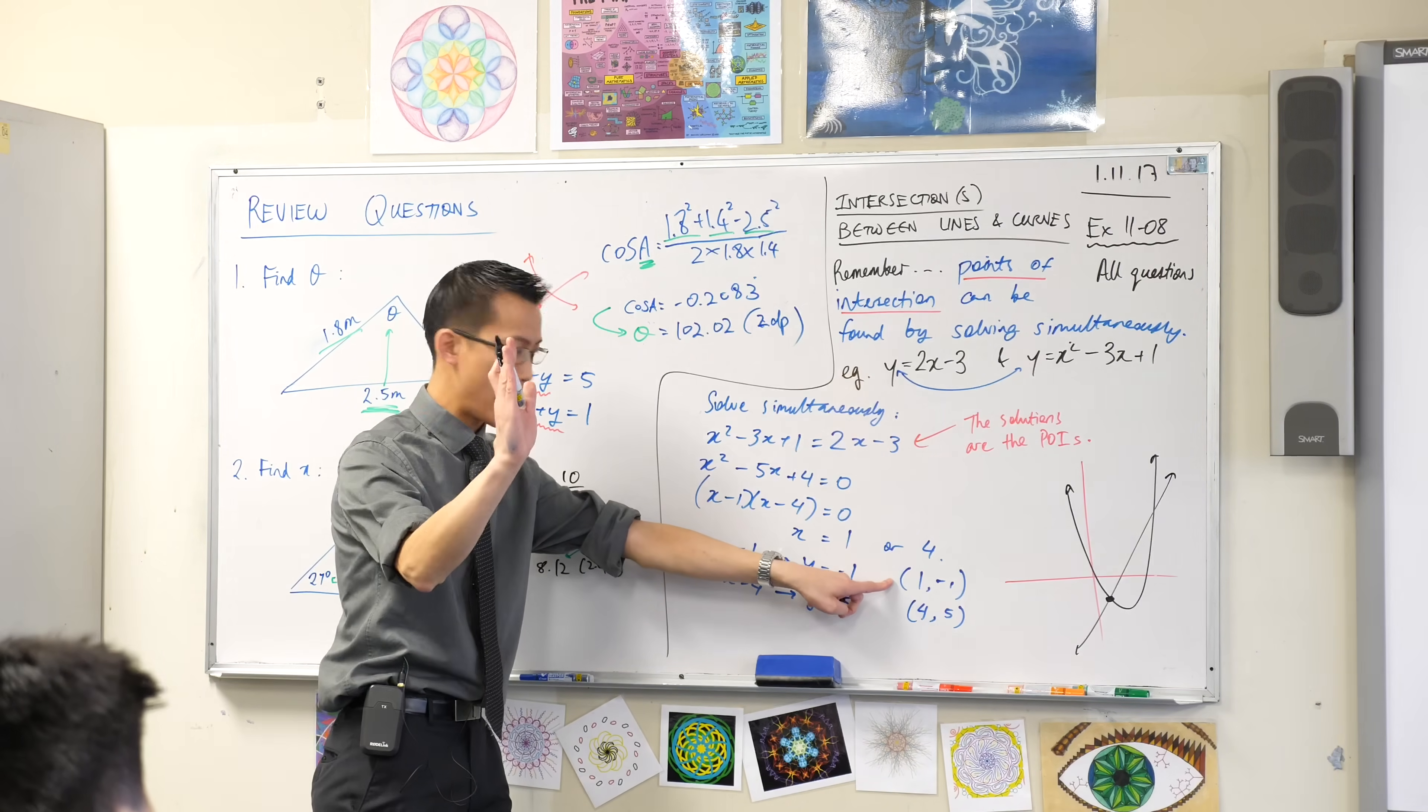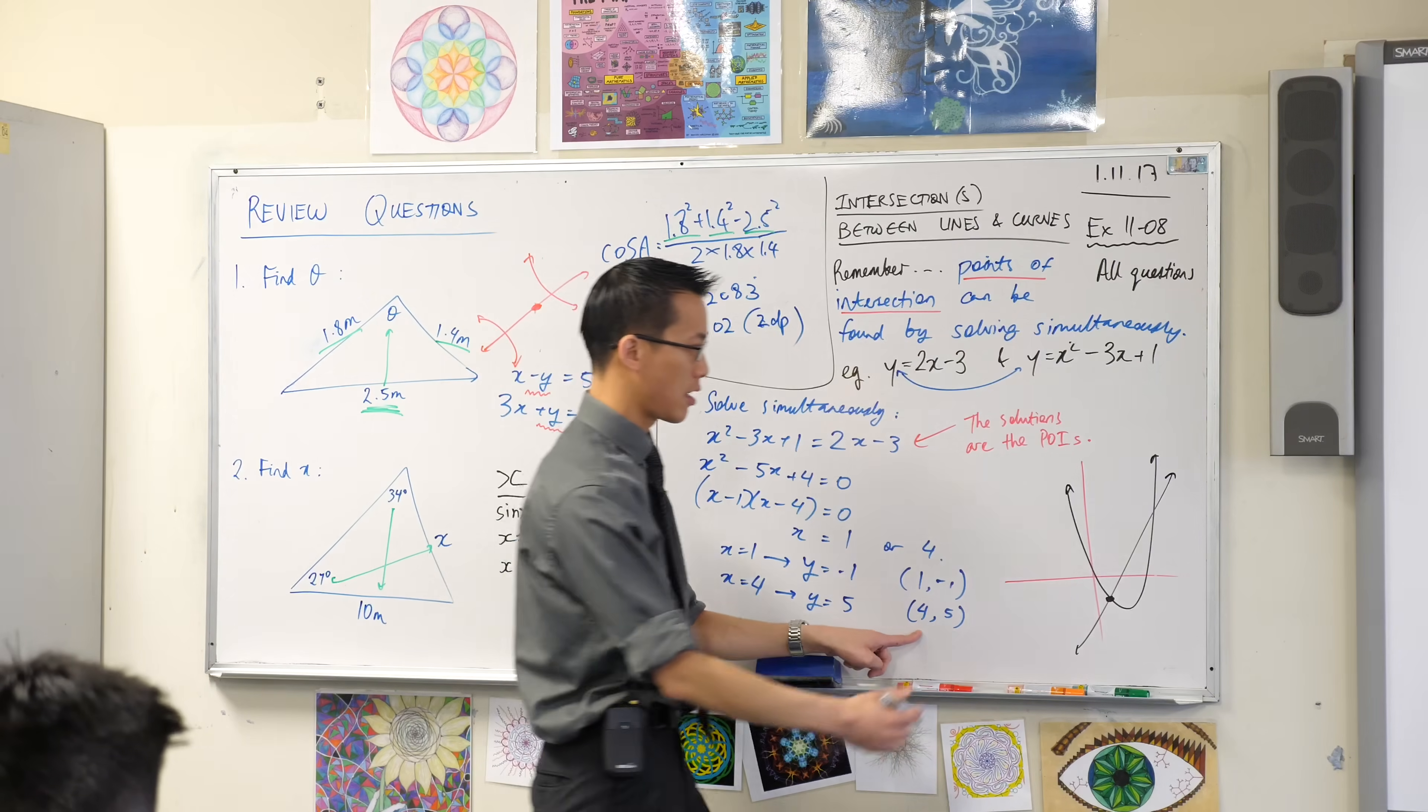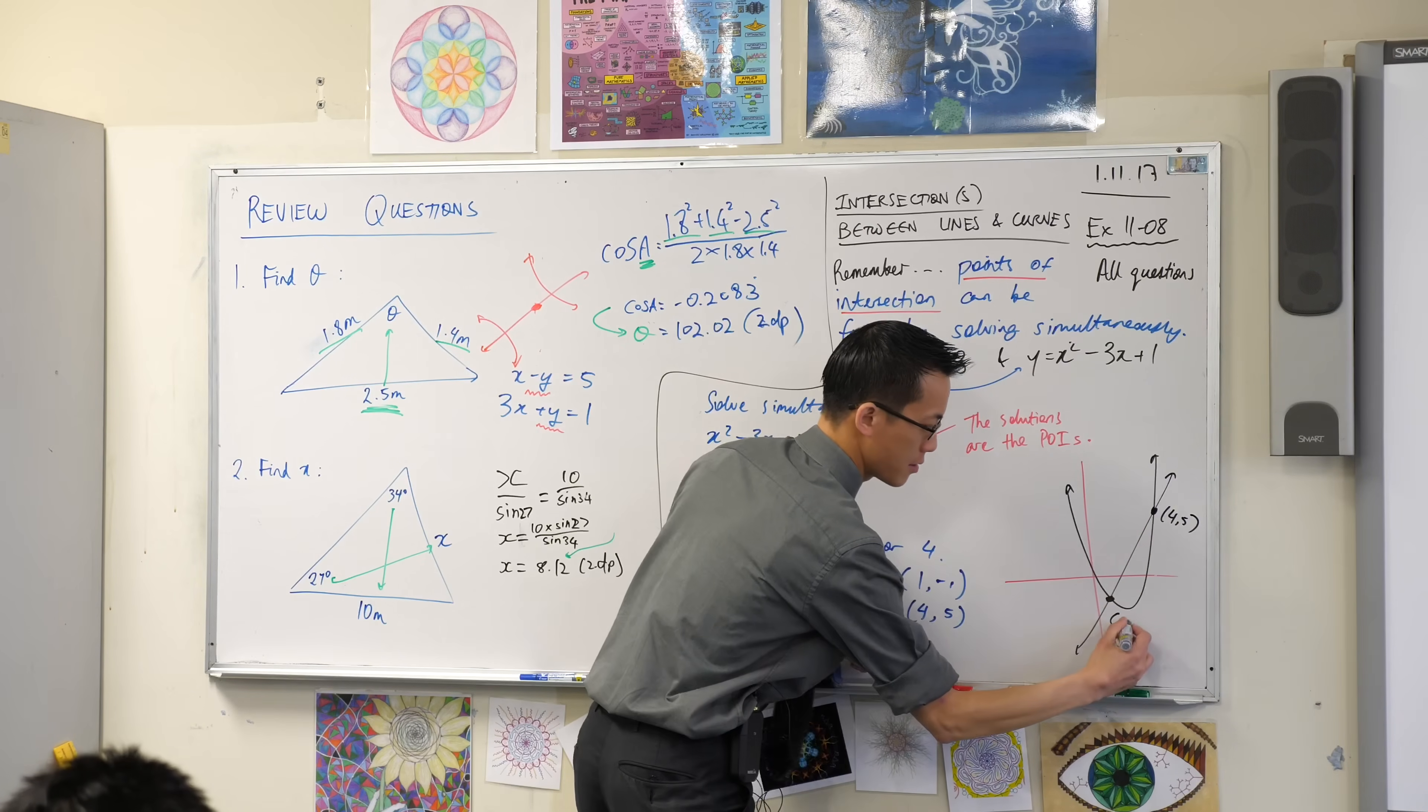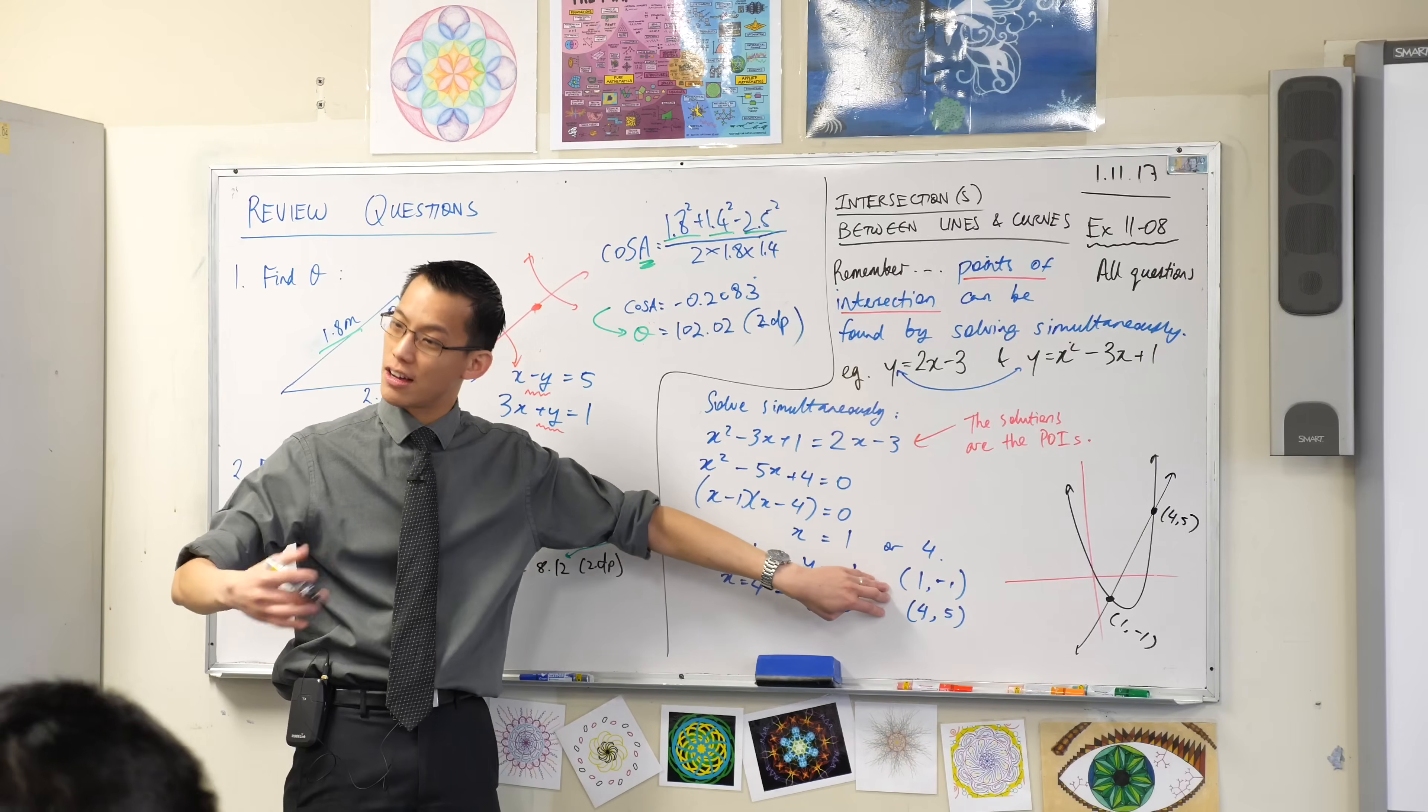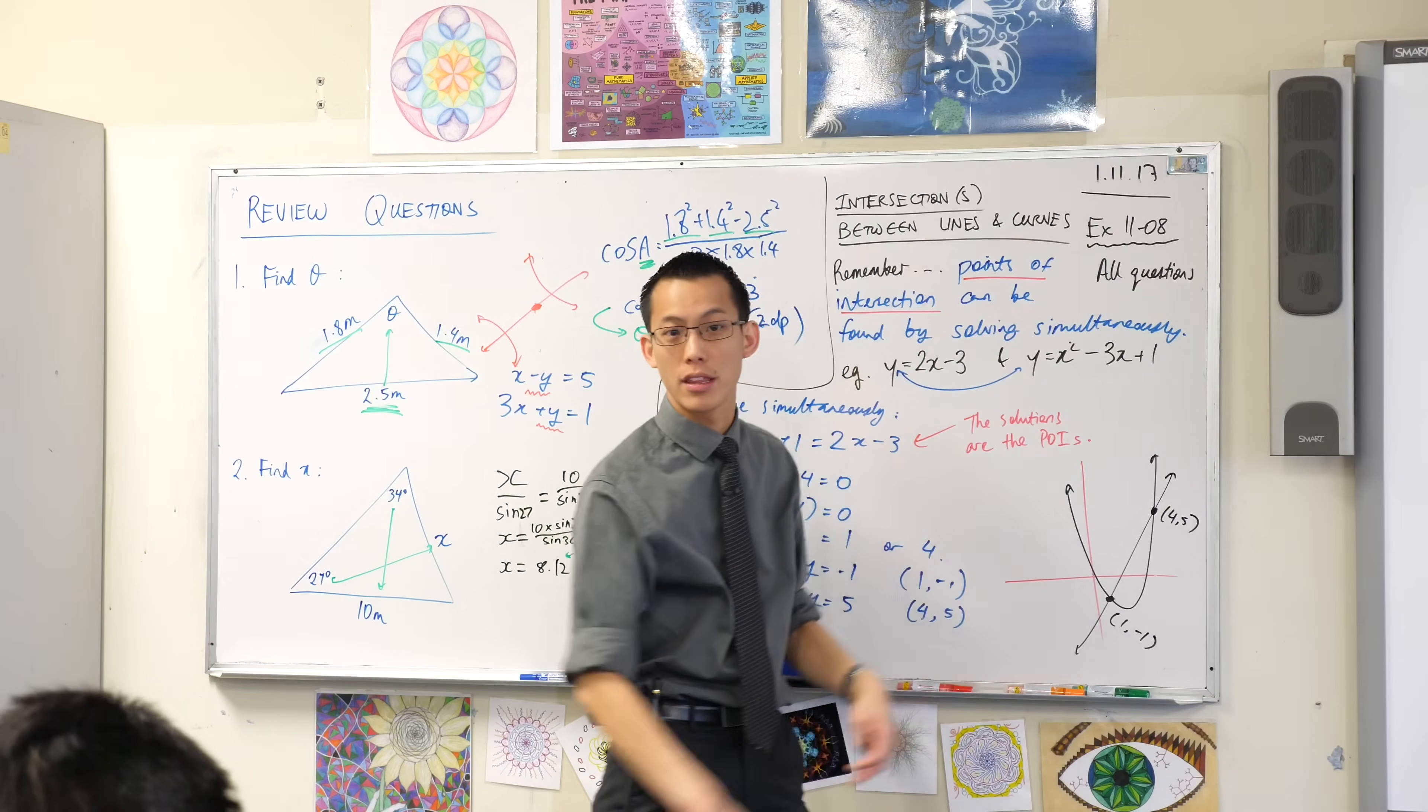One to the right, one down. So that's (1, -1). And then this guy is going to be over here. Does that make sense? So you can see what you found here algebraically has a visual meaning. Oh look, that's where the graphs collide.